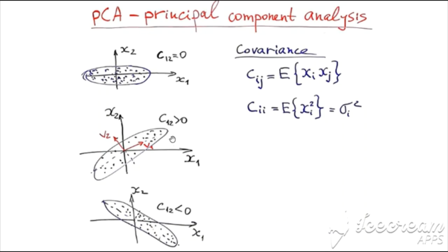If they are dependent and covariance is greater than zero, then the cloud will be elongated in a direction which has a positive angle with the X axis. And if covariance is negative, the direction of the long axis of this ellipsoid will have a negative angle with X.